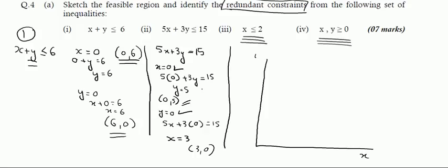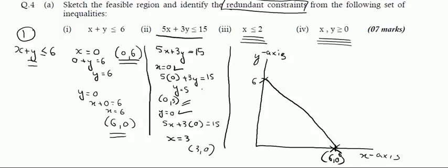This is the x-axis and this is the y-axis. On the x-axis, y is always 0, so the point (6, 0) goes here. On the y-axis, x is always 0, so the point (0, 6) goes here. This is our first line. Drawing the second line, 5x plus 3y equals 15: the point (0, 5) is below the first line, and (3, 0) is here.